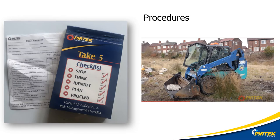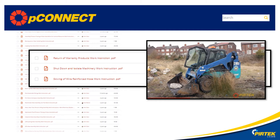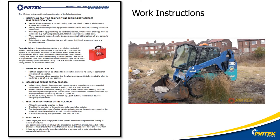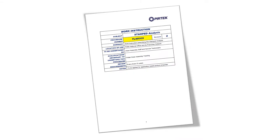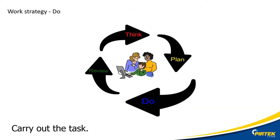Here's an example of a procedure — the Take 5 checklist. During the planning process, I discovered there's a work instruction for shutting down and isolating the machinery, which I downloaded from P-Connect. That's a stamped analysis work instruction. Think, plan, do — let's get the job done.